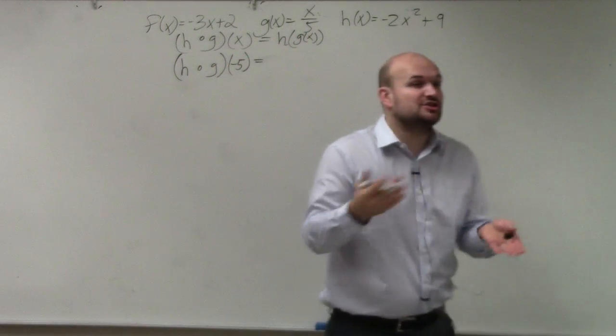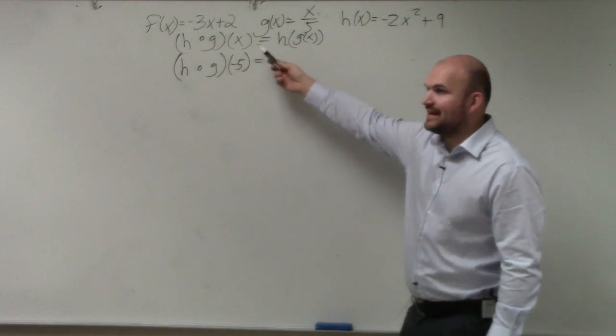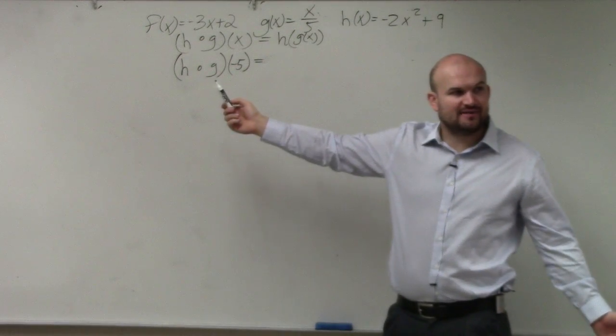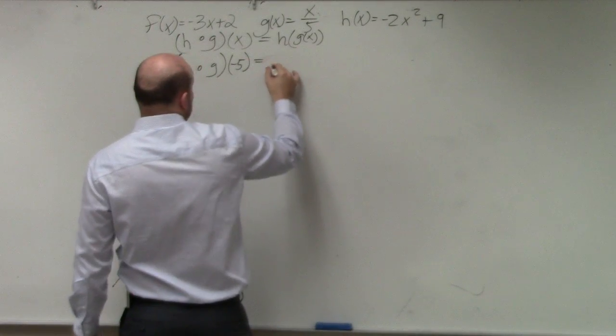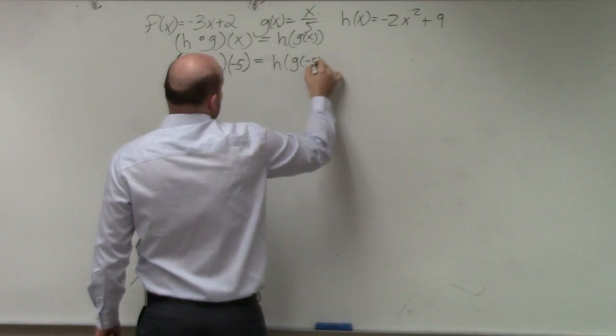Basically, what we're going to do is we're going to plug the g of x function into the h of x function. Well, now, instead of an x, our input value is negative 5. So therefore, Ryan, what we're simply going to do is the same thing, but instead of g of x, it's going to be g of negative 5.